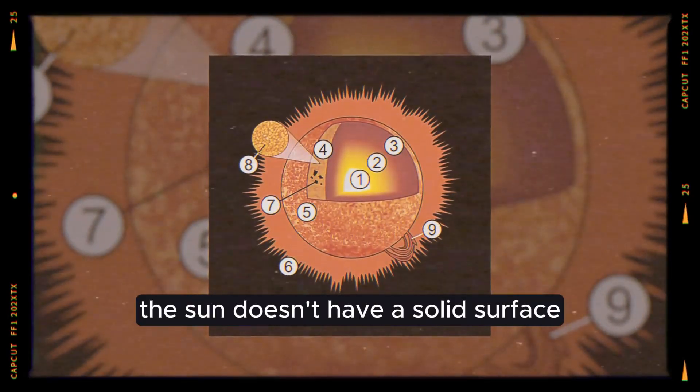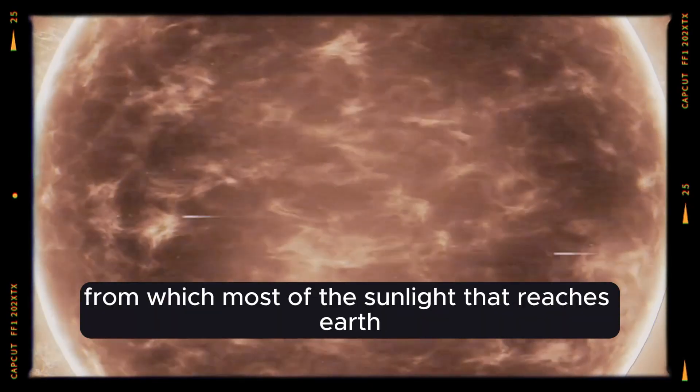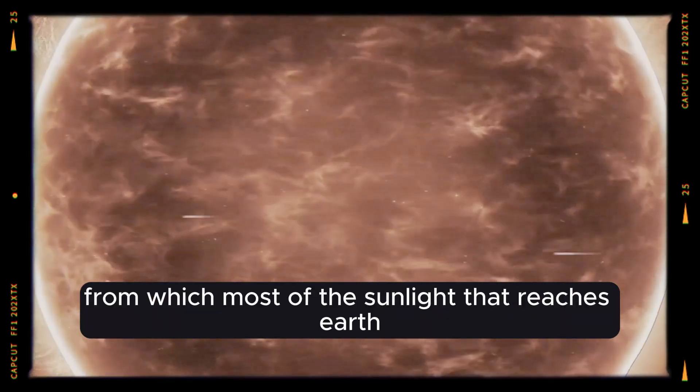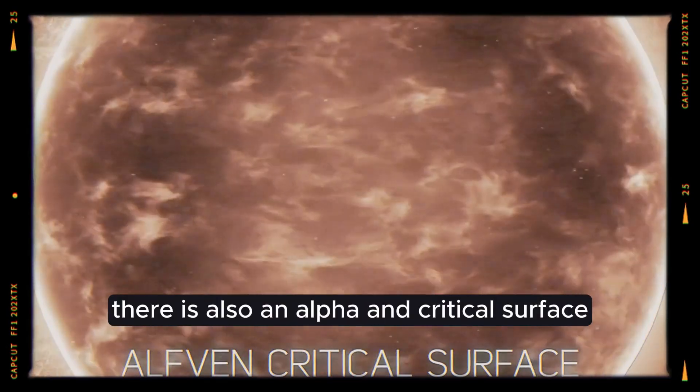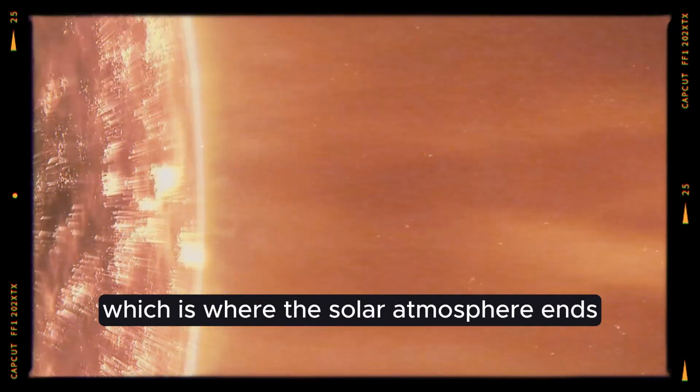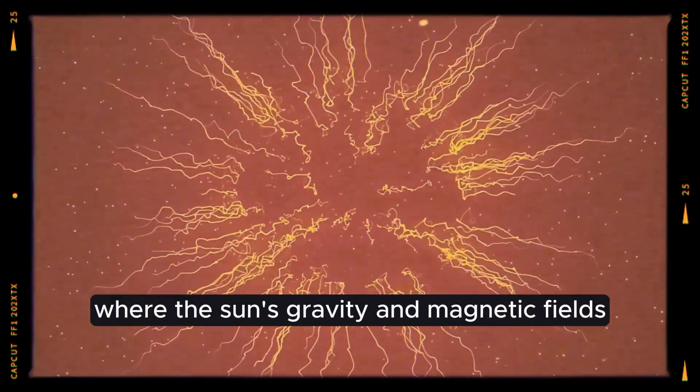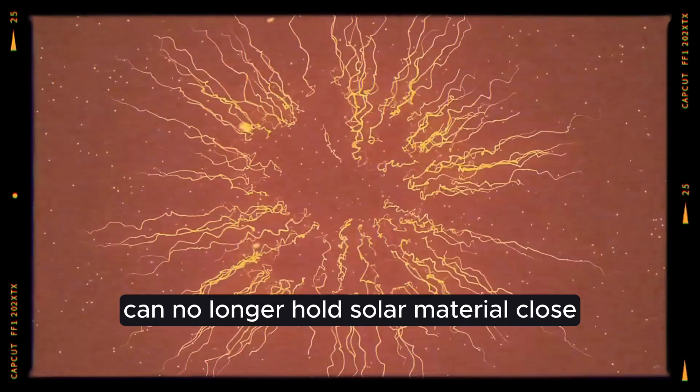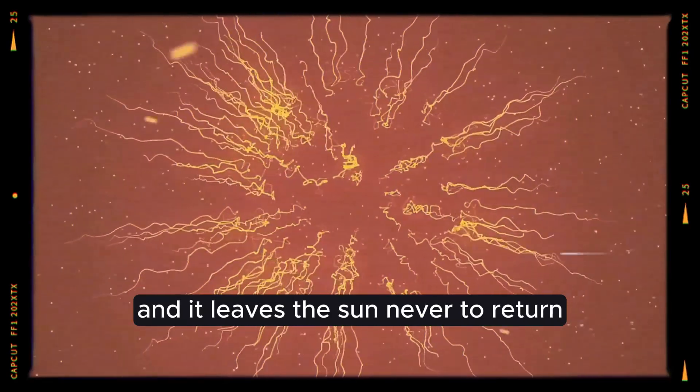The sun doesn't have a solid surface, but it does have a photosphere, which is the visible surface from which most of the sunlight that reaches Earth directly comes. There is also an alpha and critical surface, which is where the solar atmosphere ends and the solar wind starts. It's at this point, Alphan, where the sun's gravity and magnetic fields can no longer hold solar material close, and it leaves the sun never to return.